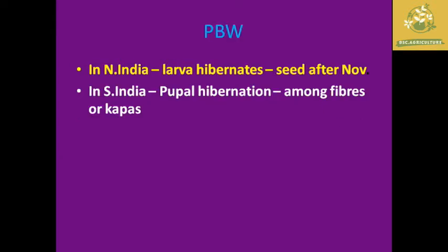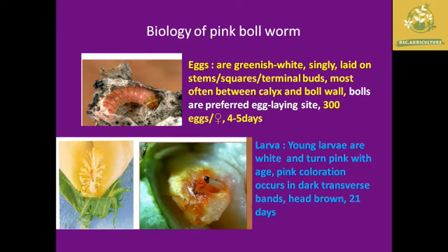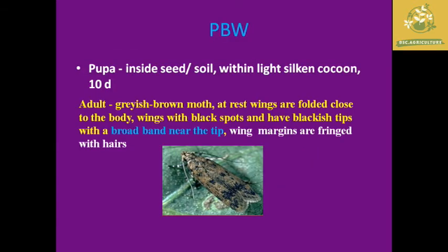In north India, larvae hibernate after November, but in south India, pupal hibernation among fiber and kapas is known. For biology: the egg is greenish-white and singly laid on the stem; a single female lays around 300 eggs. The larva is destructive — white in color and turns pink after maturation, with a dark transverse head band, and has a larval period of 21 days. The pupa is formed inside seed or soil with light silk cocoon, with a pupal period of 10 days.